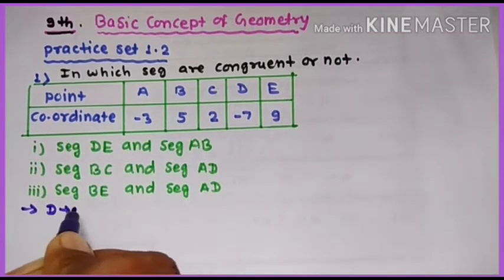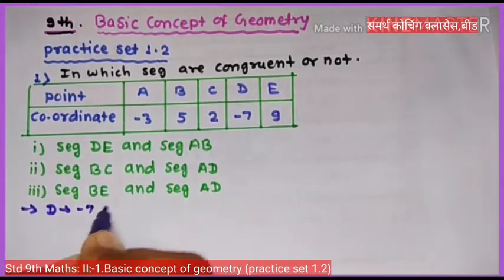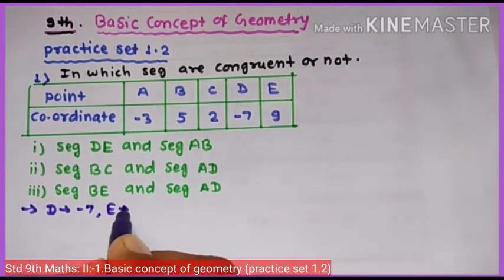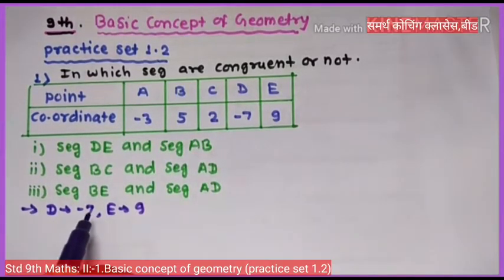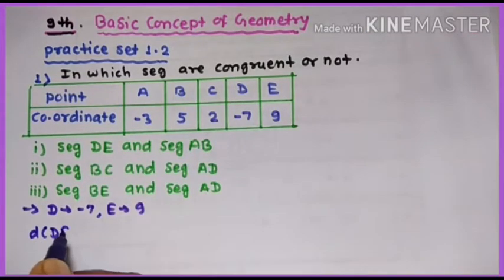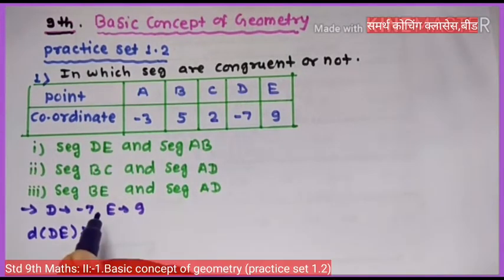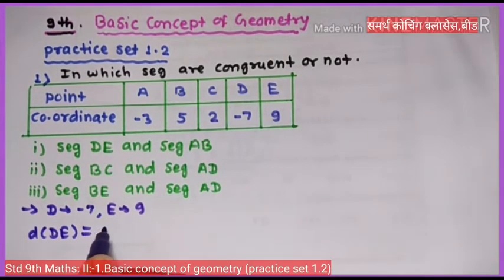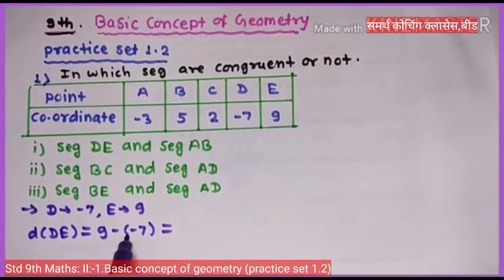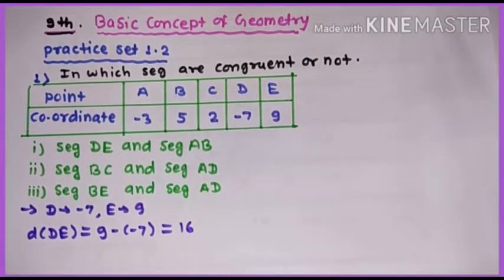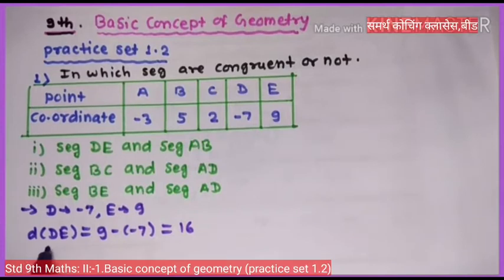D चा coordinate minus 7 आणि E चा coordinate 9 आहे. 9 is greater than minus 7, so distance DE = 9 minus (minus 7) = 9 plus 7 = 16. आपण distance DE काढले, ते 16 आले.